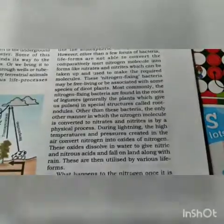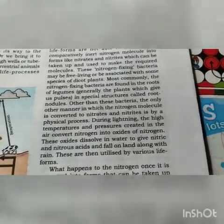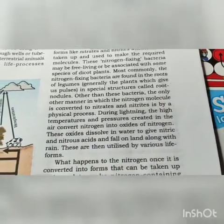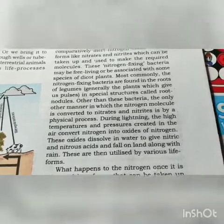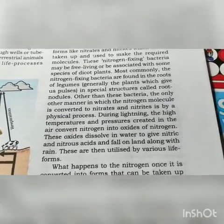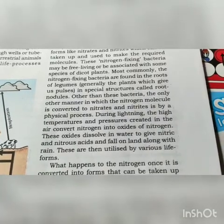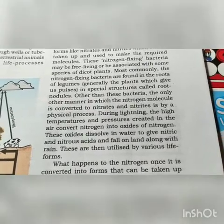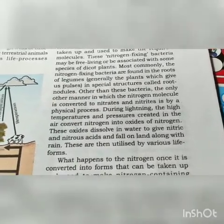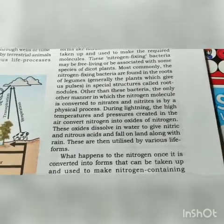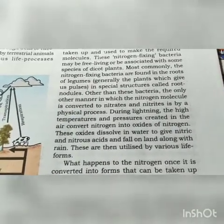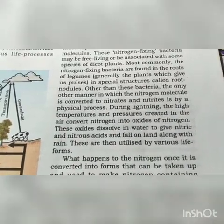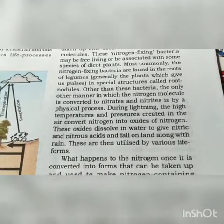These are then utilized by various life forms. During lightning, due to high temperature and pressure, free nitrogen gas is converted into oxides of nitrogen. These oxides dissolve in water, giving nitric and nitrous acids, and fall down along with rain, where various life forms utilize that nitrogen. All life forms cannot take atmospheric nitrogen directly — only some bacteria can convert it into nitrites and nitrates.